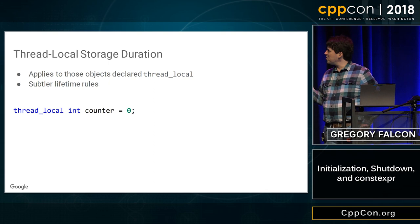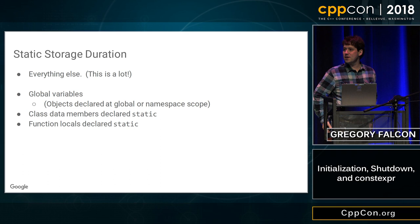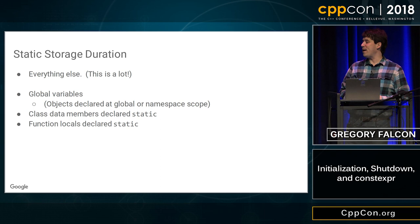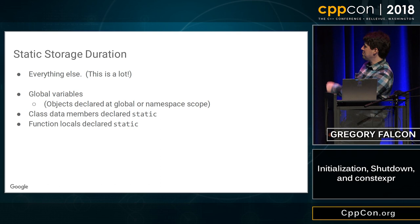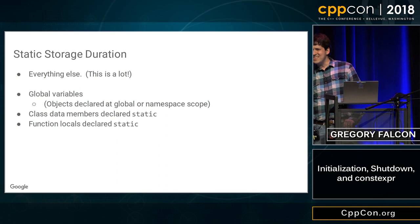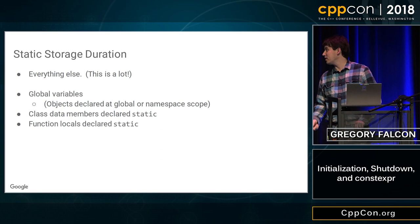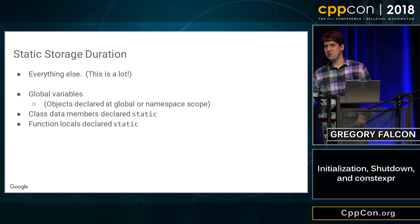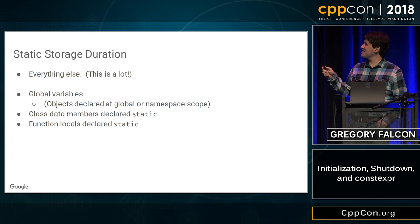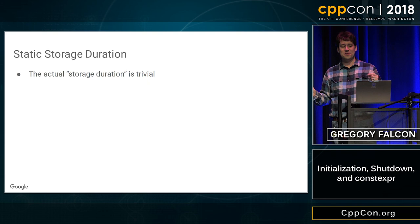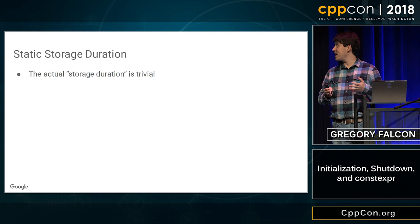The lifetime rules for thread-local are kind of similar to the next case, which we're going to talk about a lot: objects with static storage duration. This is everything else — global variables whether in the global namespace or a nested namespace, class data members declared static, and function-local static variables. The storage duration for static storage duration objects is trivial: it lasts for the whole program. If you have an object of static storage duration, the answer to how long will this storage last is: until the program terminates. So it's really the simplest storage duration.